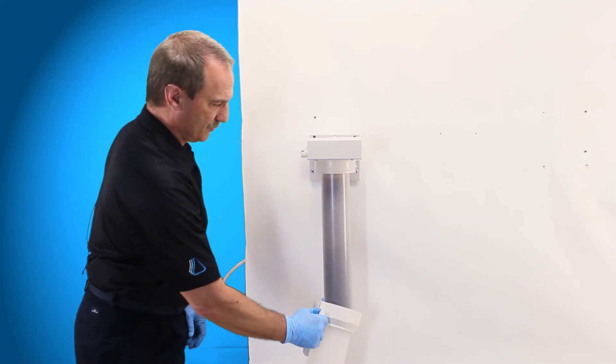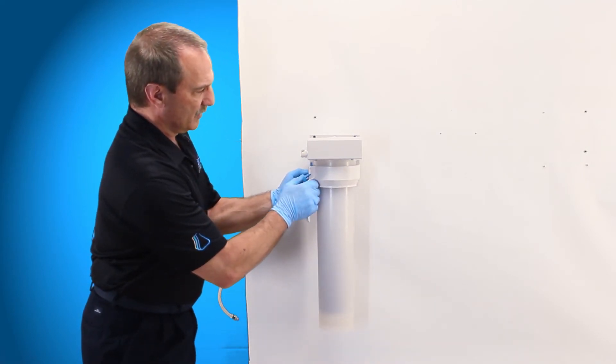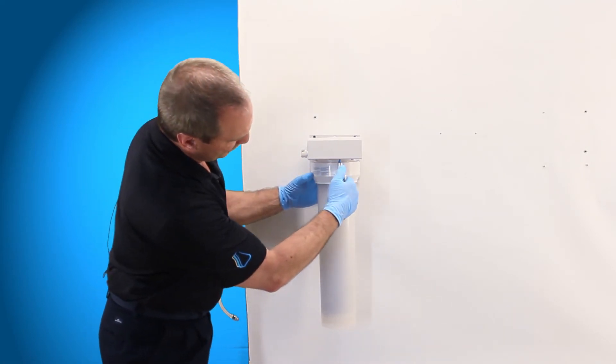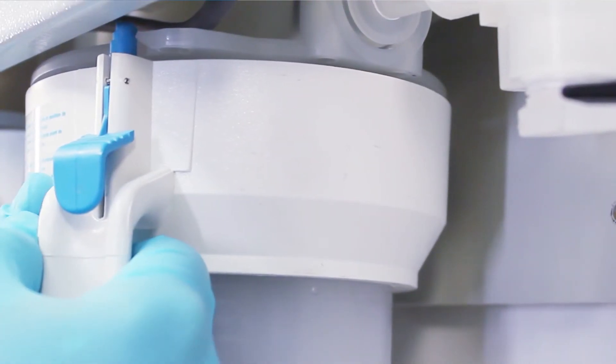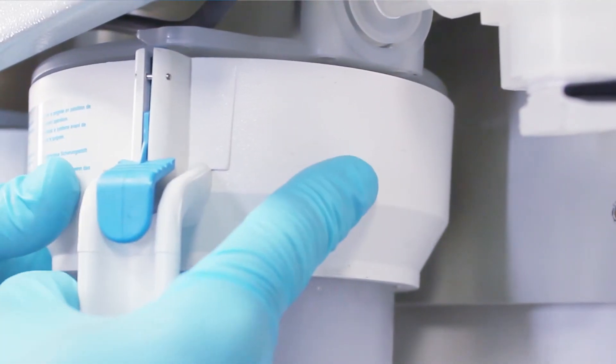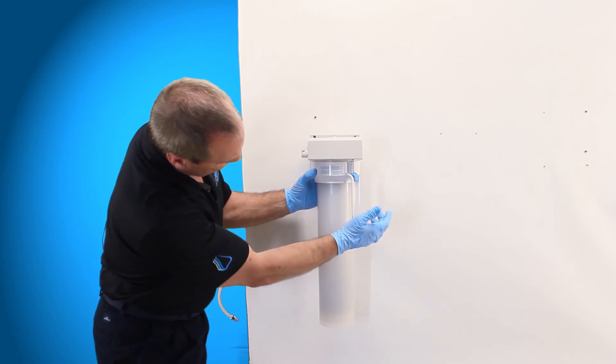Then you take your canister put it up in place. It's a quarter turn locking canister. Twist it until it gets over to the stop. Then pull your pin down until it gets past the stop.